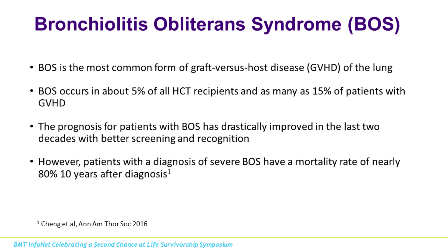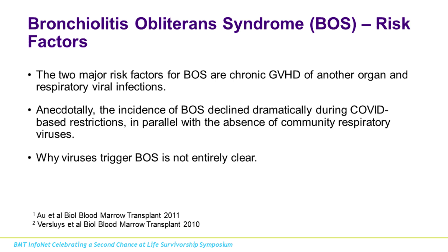Bronchiolitis obliterans syndrome is graft-versus-host disease of the lung. It occurs in about 5% of transplant recipients and as many as 15% of patients who have some other form of GVHD, most commonly skin or gut. The prognosis has drastically improved in recent decades because we understand the disease better and screen for it better. If diagnosed late, the mortality rate can be nearly 80% ten years after diagnosis. The earlier we catch it, the better patients do.